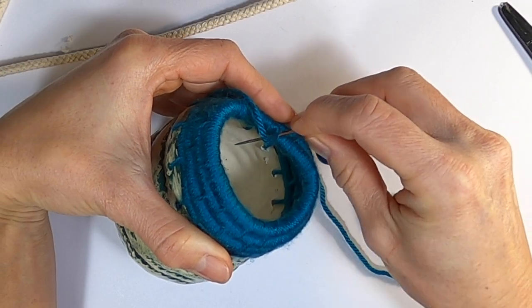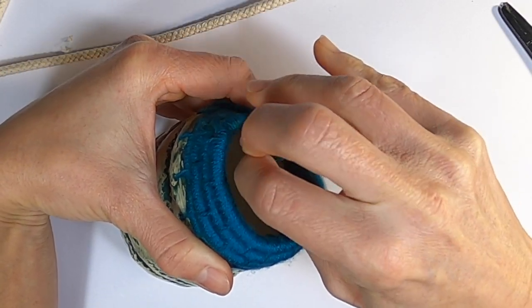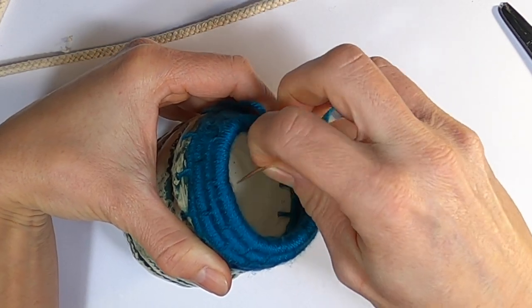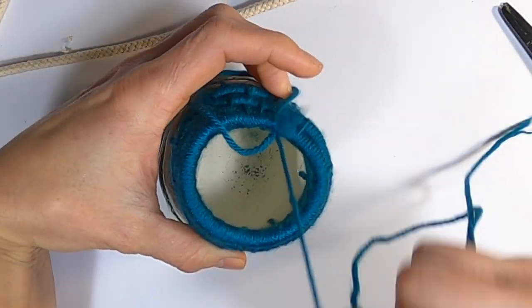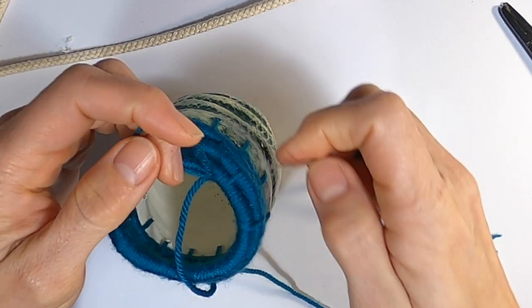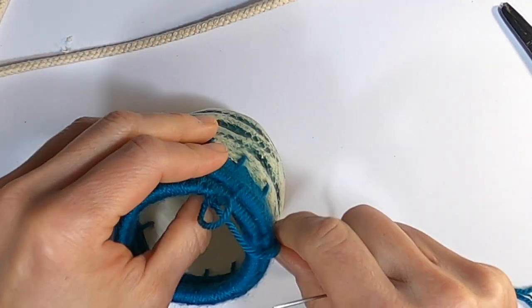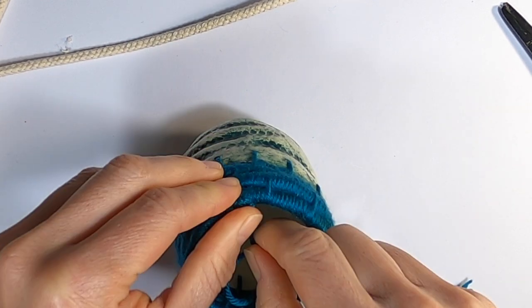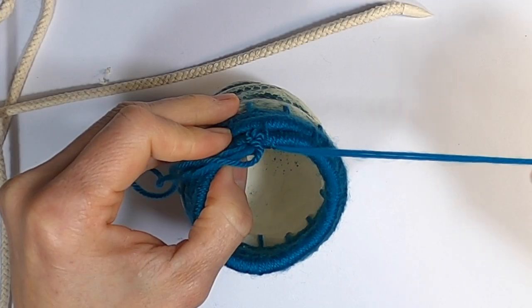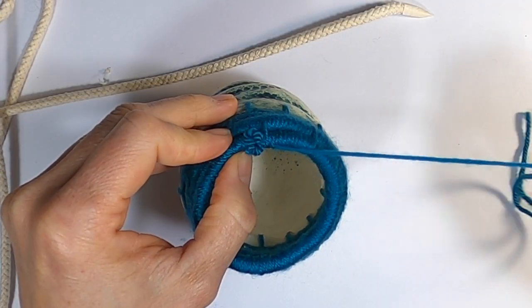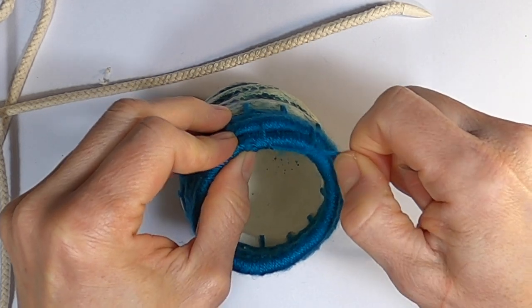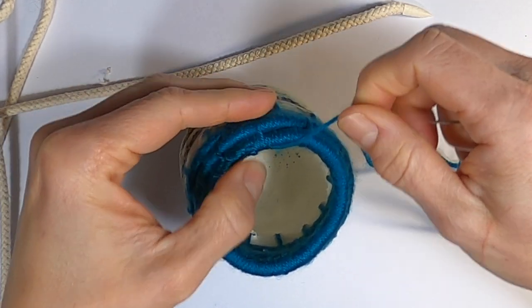Once the tail of the cord is covered and secure, you can knot the wool by threading the needle back through the loop as you pull it through. To make it extra secure, thread the needle under a few of the wool loops and draw it through, clipping off the excess.